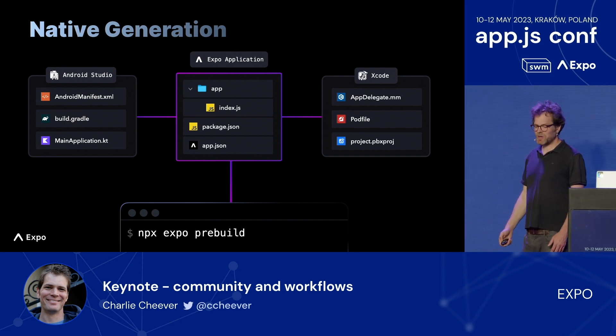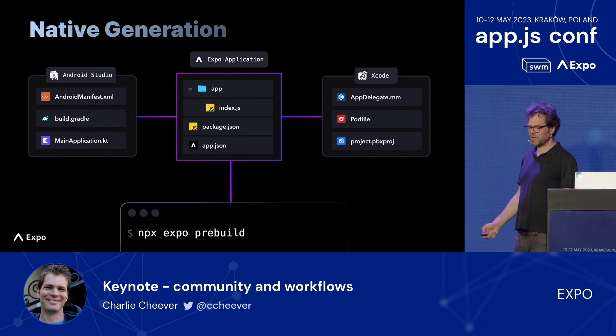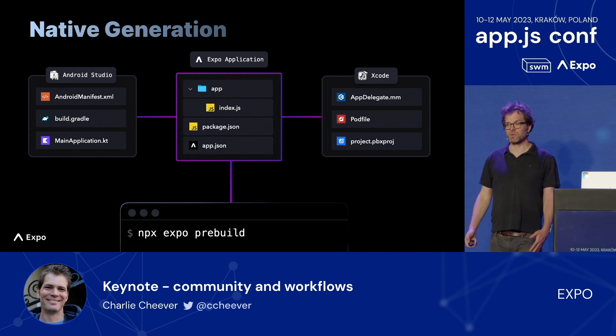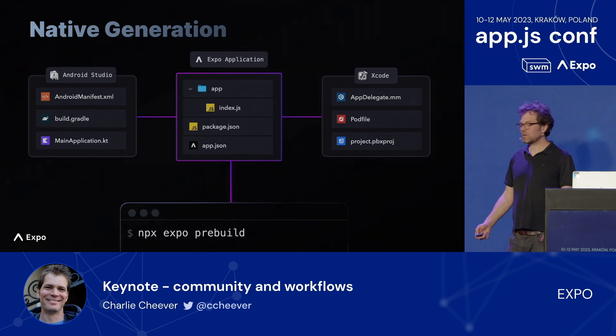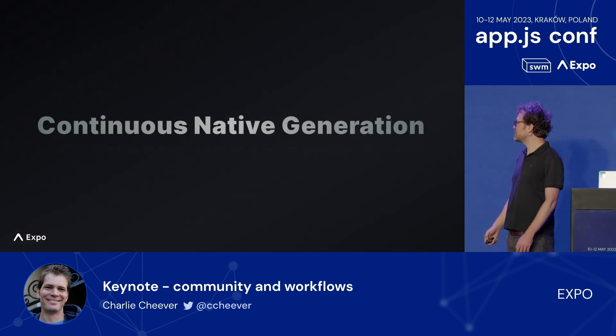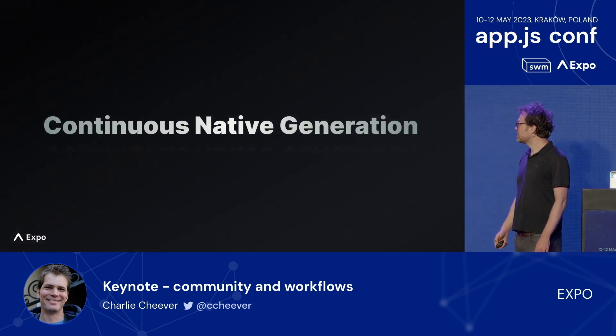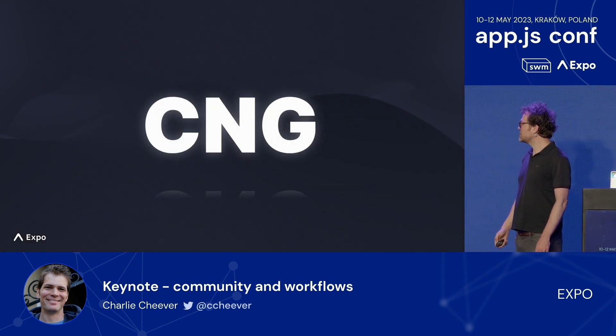When you combine pre-build with config plugins, auto-linking, the Expo modules API, and app lifecycle events, you get what we call Continuous Native Generation, or CNG for short.